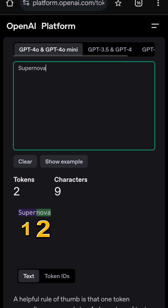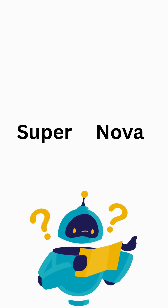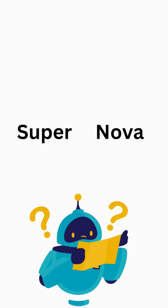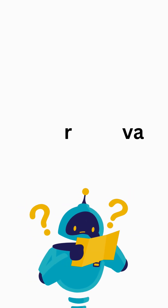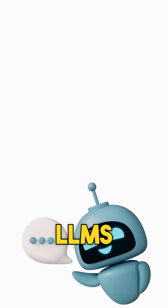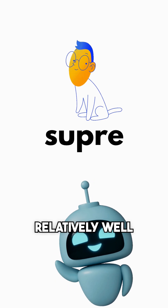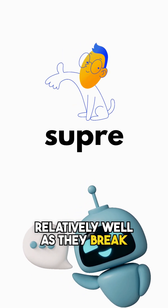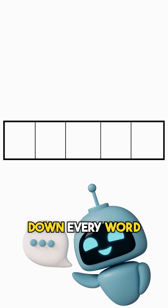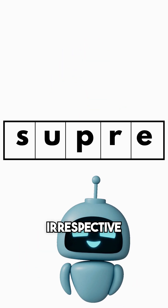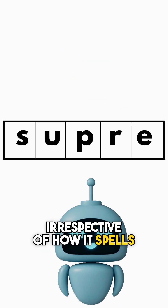It uses a greedy approach, repeatedly merging the most frequent adjacent pairs until no more matches can be made. This means that LLMs can handle even misspelled words relatively well, as they break down every word into tokens irrespective of how it's spelled.